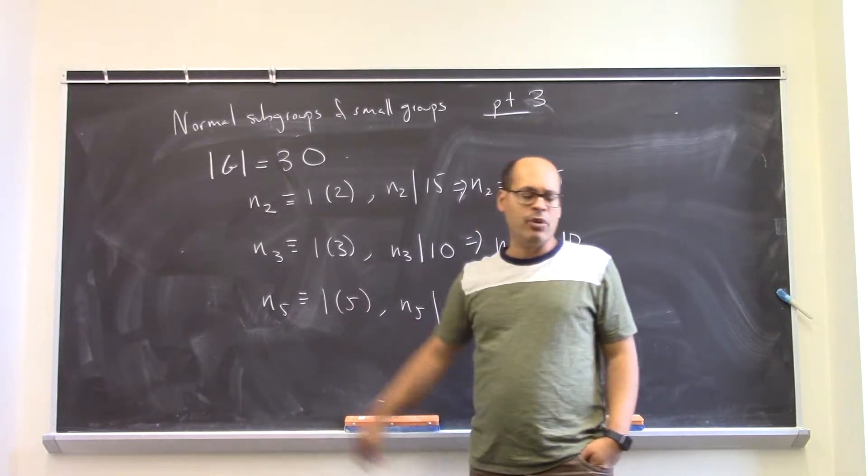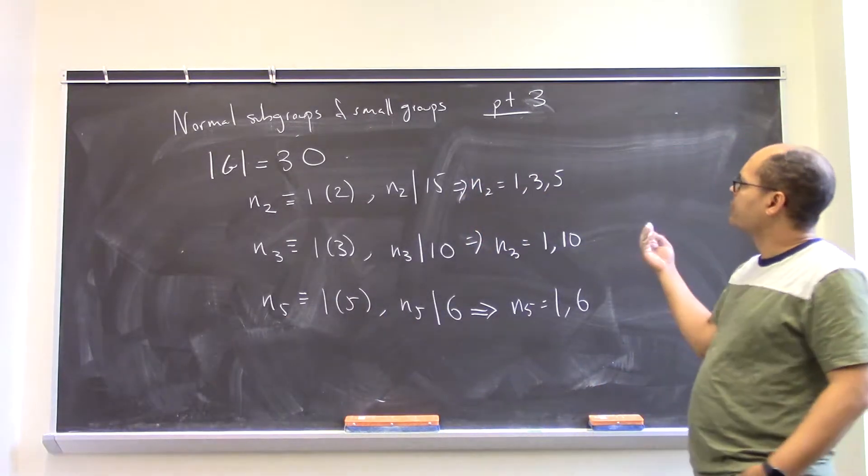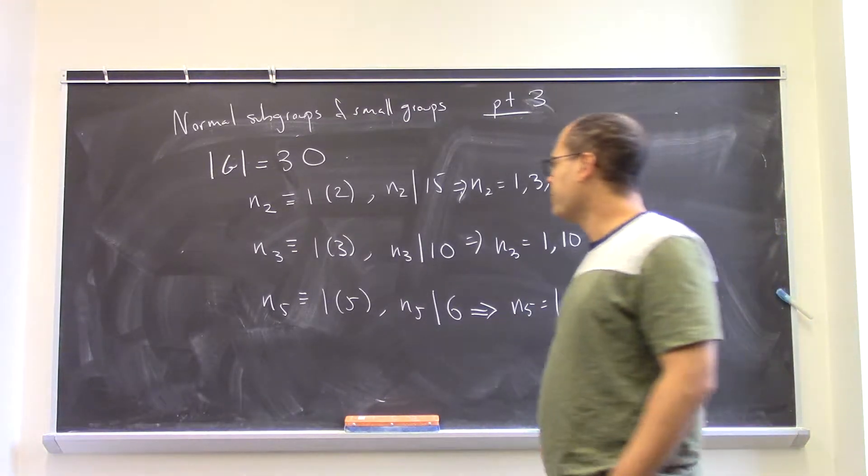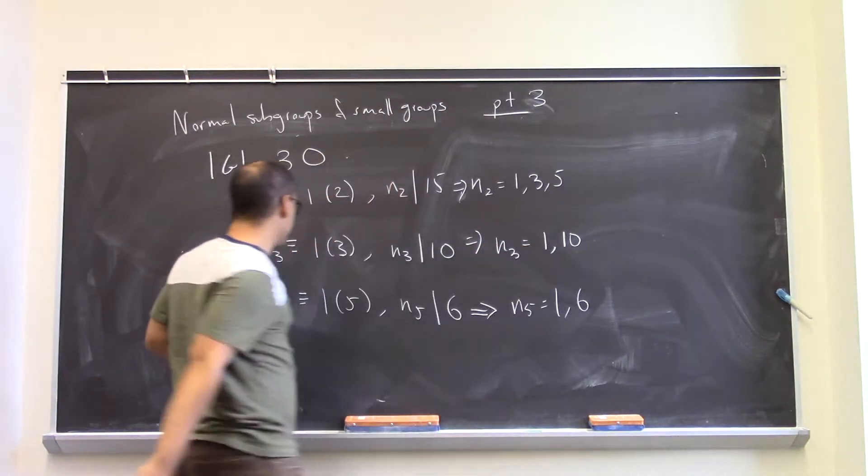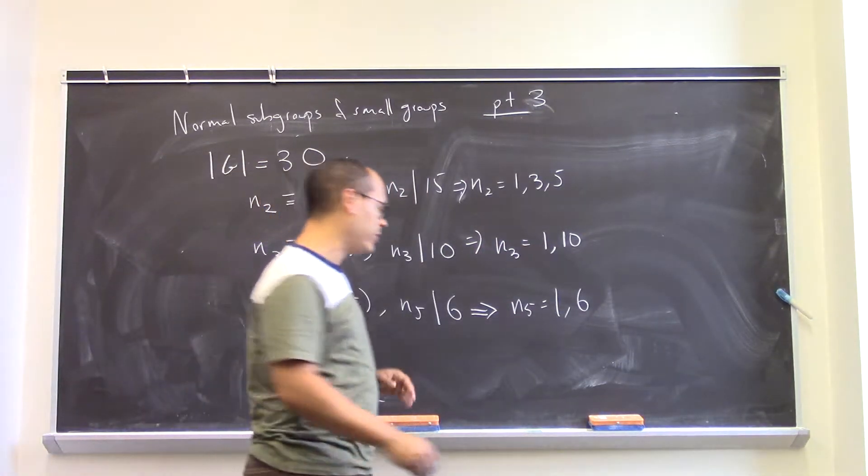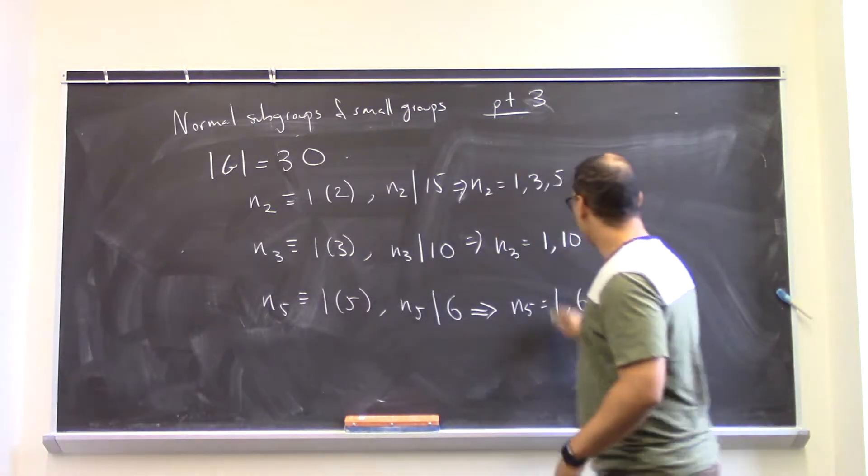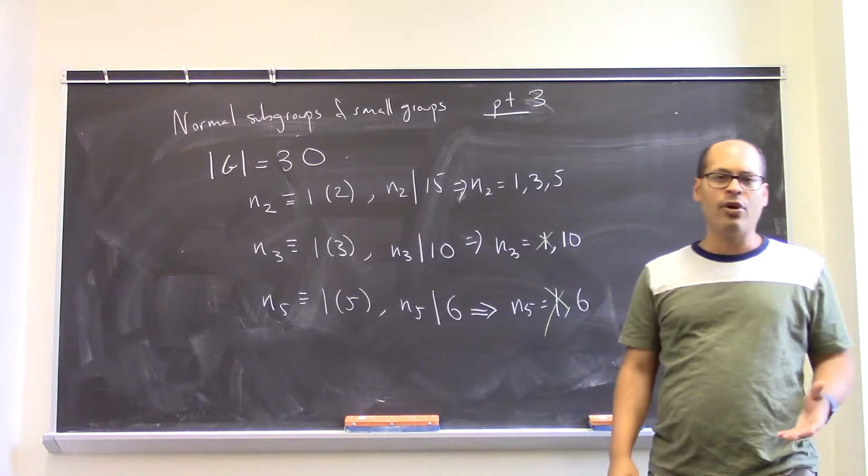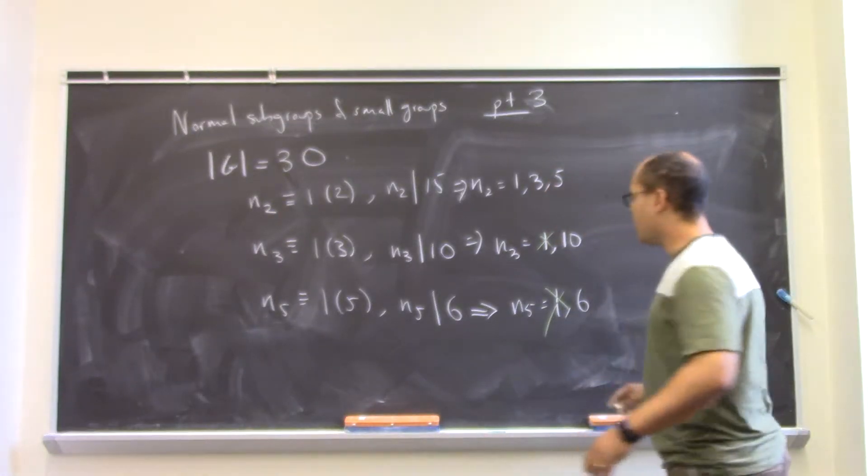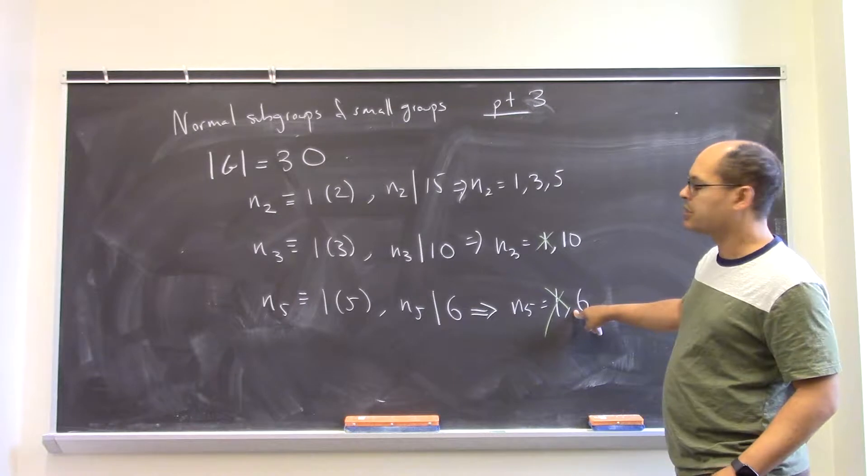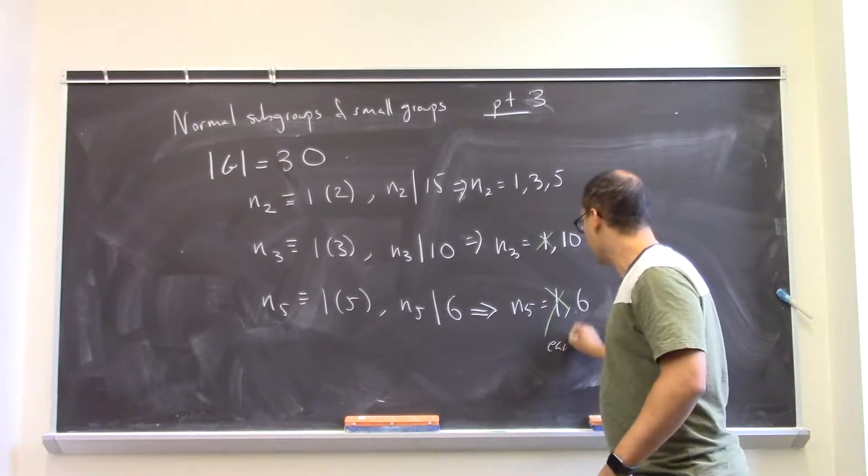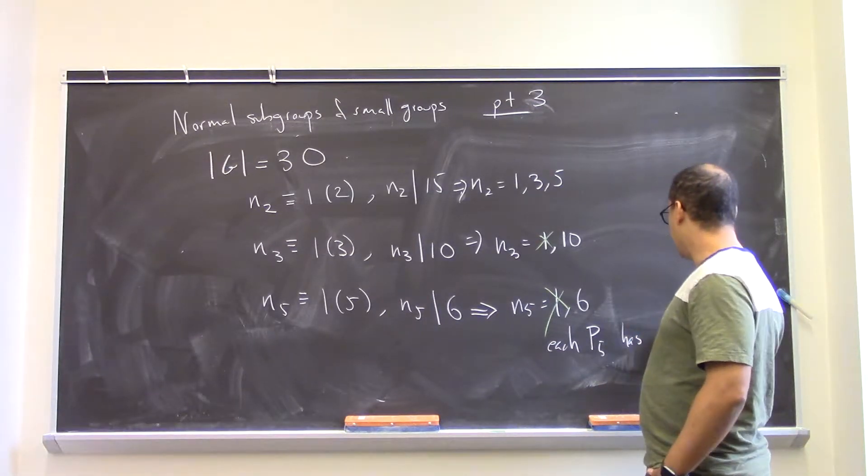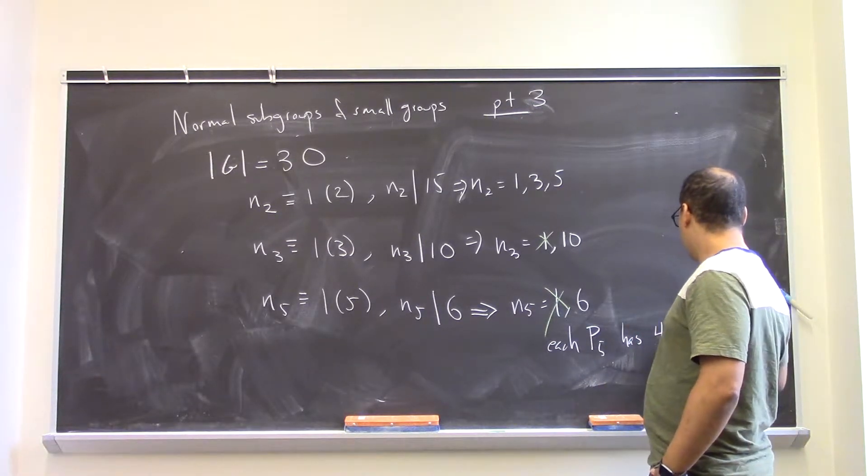The whole group is only order 30. I have 6 subgroups with elements of order 5. I have 10 subgroups with elements of order 3, maybe. I mean, I'm thinking worst-case scenario, right? So what if this one isn't normal and this one isn't normal? Already I've accounted for a whole bunch of elements, right? If you think about it, in each of these Sylow 5 subgroups, each of these 5-Sylow subgroups has 4 non-identity elements.